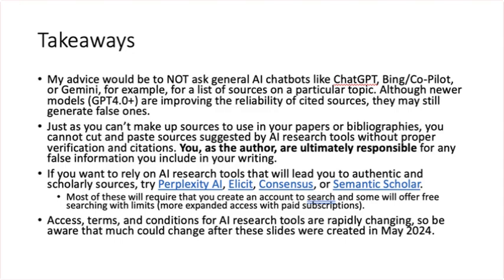ChatGPT does not have the ability to match relevant sources to any given topic. It may do fine with some topics or sources, but it might also fabricate sources that don't exist. My advice would be to not ask ChatGPT, Bing, Copilot, or Gemini for a list of sources on a particular topic. Although newer models — GPT-4.0 and up — are improving the reliability of cited sources, they may still generate false ones.